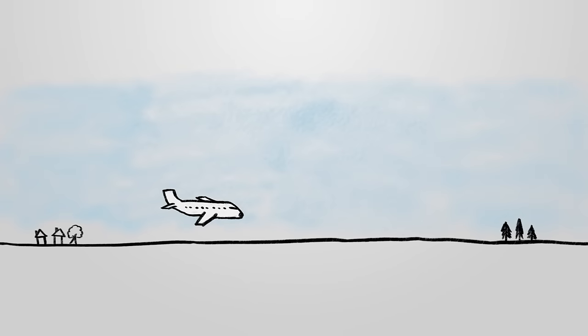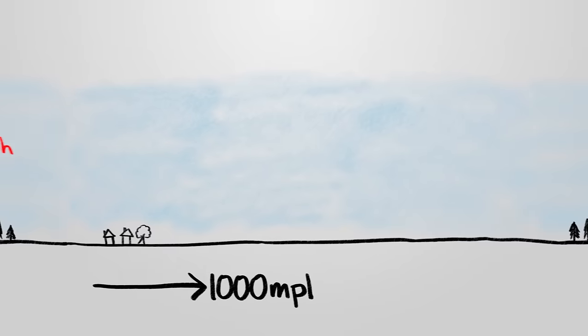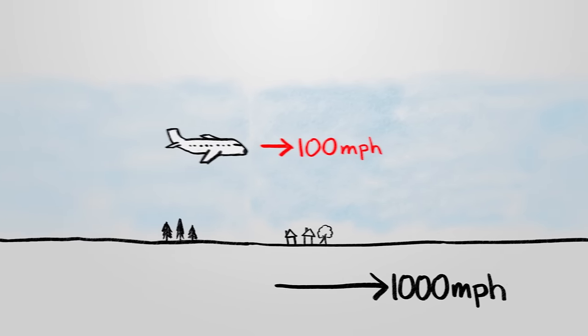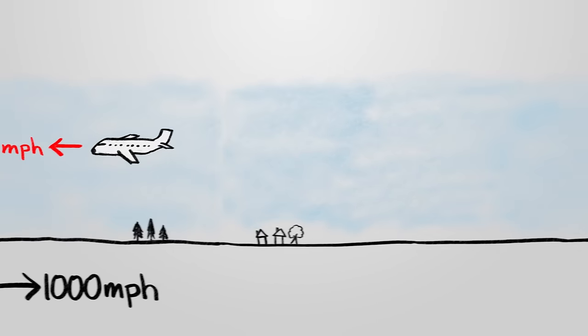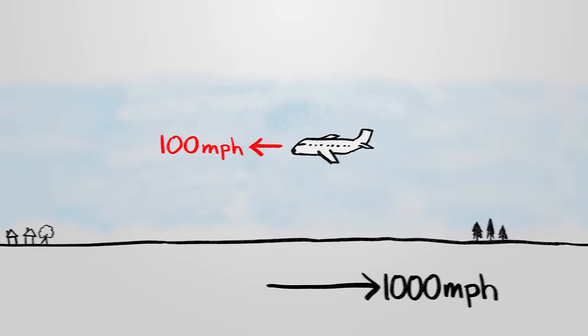For an airplane to get anywhere, it has to start moving relative to the ground and through the air, at something like a hundred or so miles per hour. So when it flies east, it's actually moving a thousand plus a hundred miles an hour to the east, and when it flies west, it's actually moving a thousand minus a hundred miles an hour to the east.